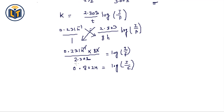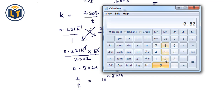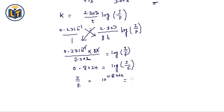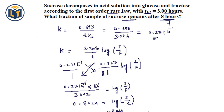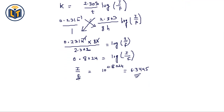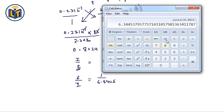To solve for I/F, we take the antilog of both sides: I / F = 10^0.8024 = 6.3445. Since the question asks for the fraction of sucrose remaining, we need F/I (the inverse ratio): F / I = 1 / 6.3445.